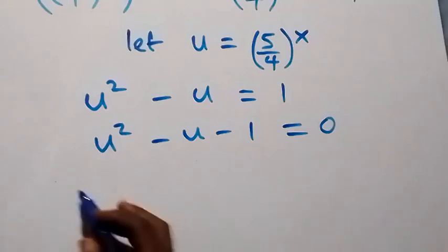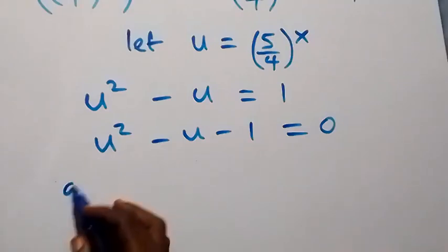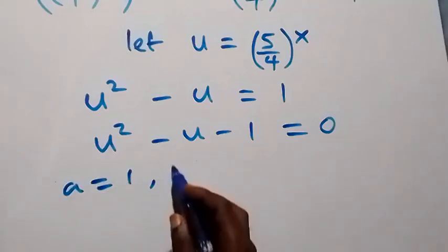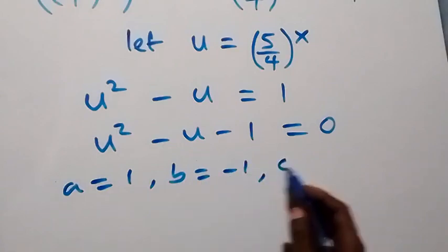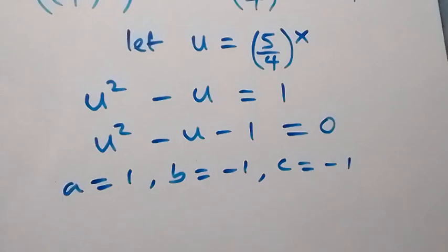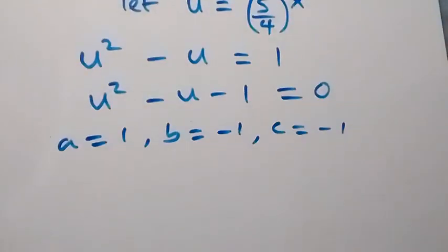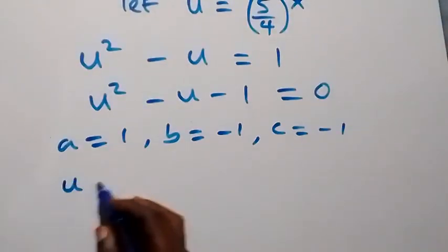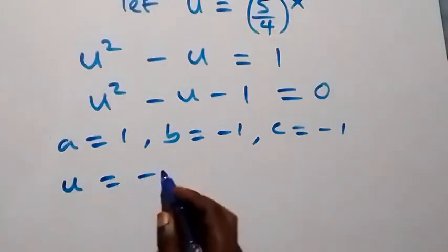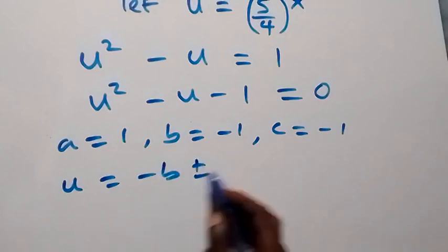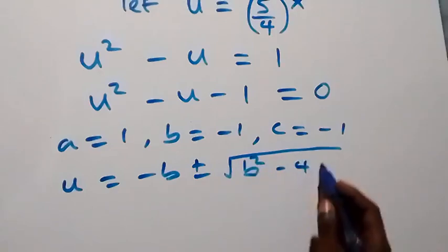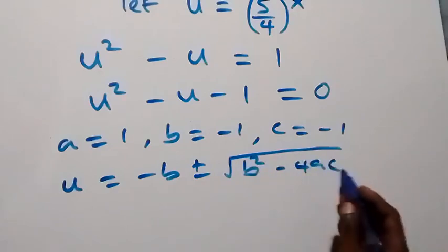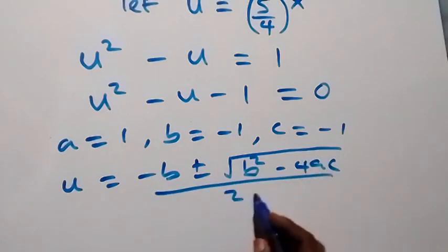Solving this quadratic equation: a equals 1, b equals minus 1, and c equals minus 1. Using the quadratic formula, u equals minus b plus or minus square root of (b squared minus 4ac), all over 2a.